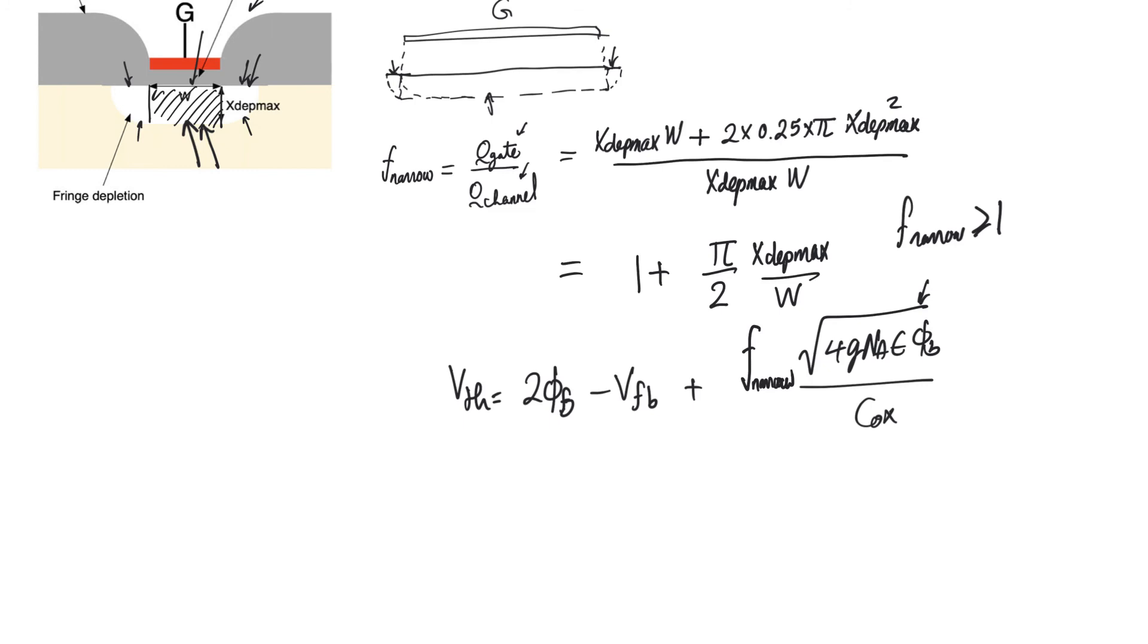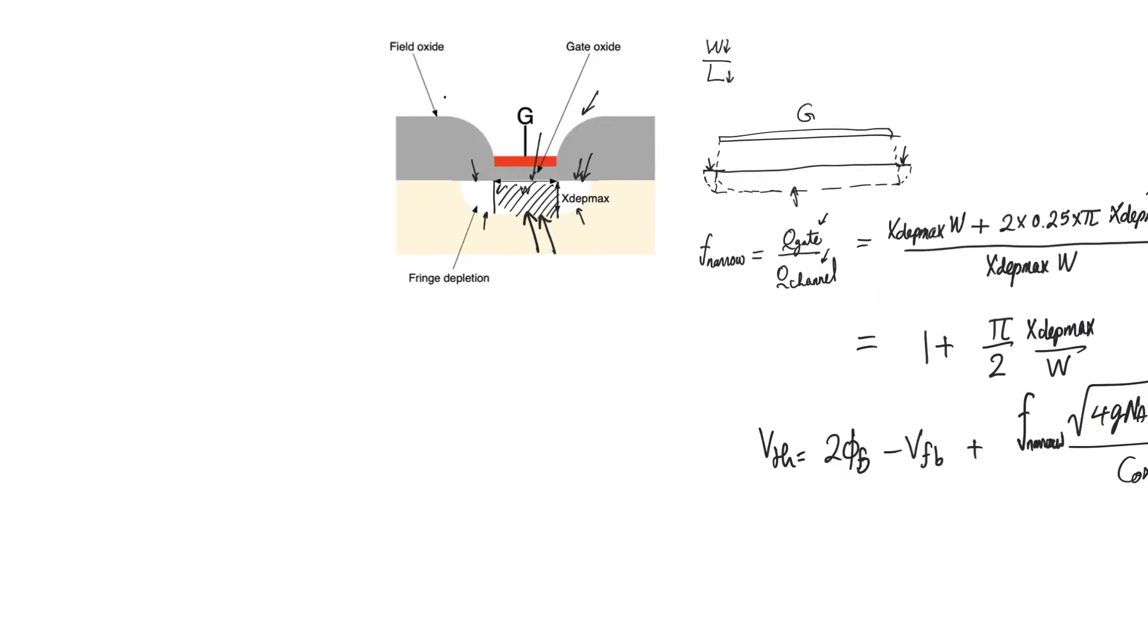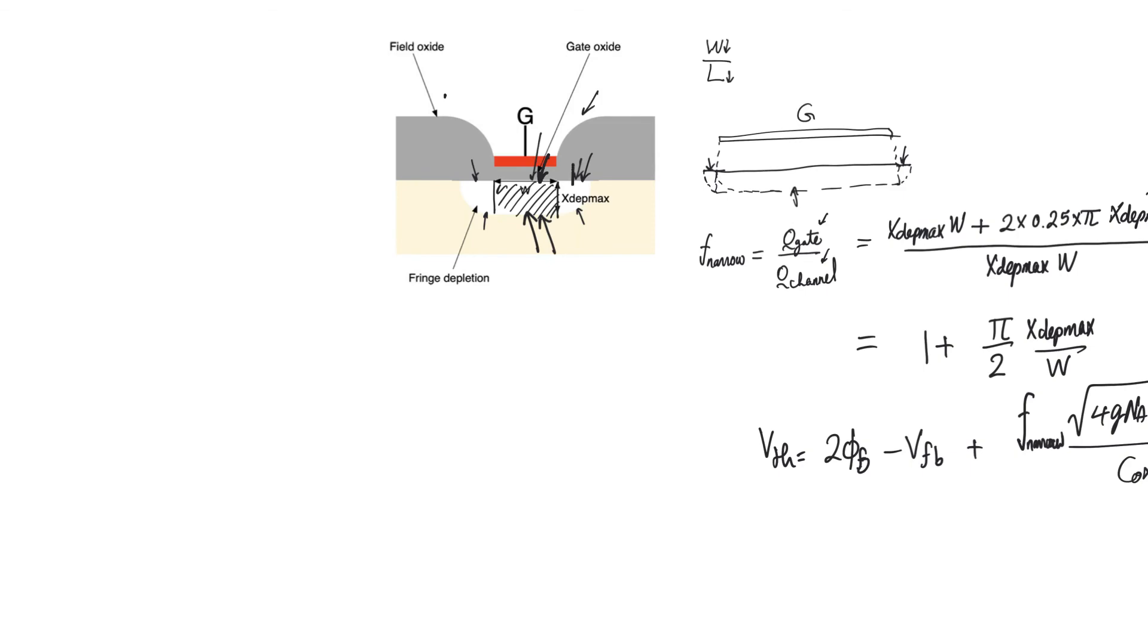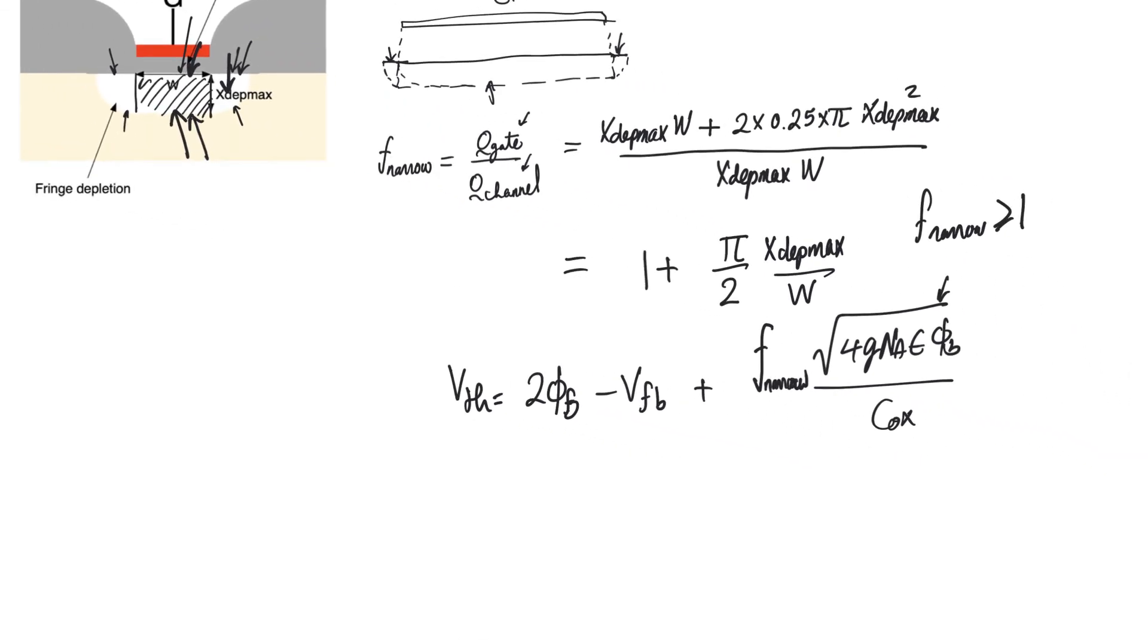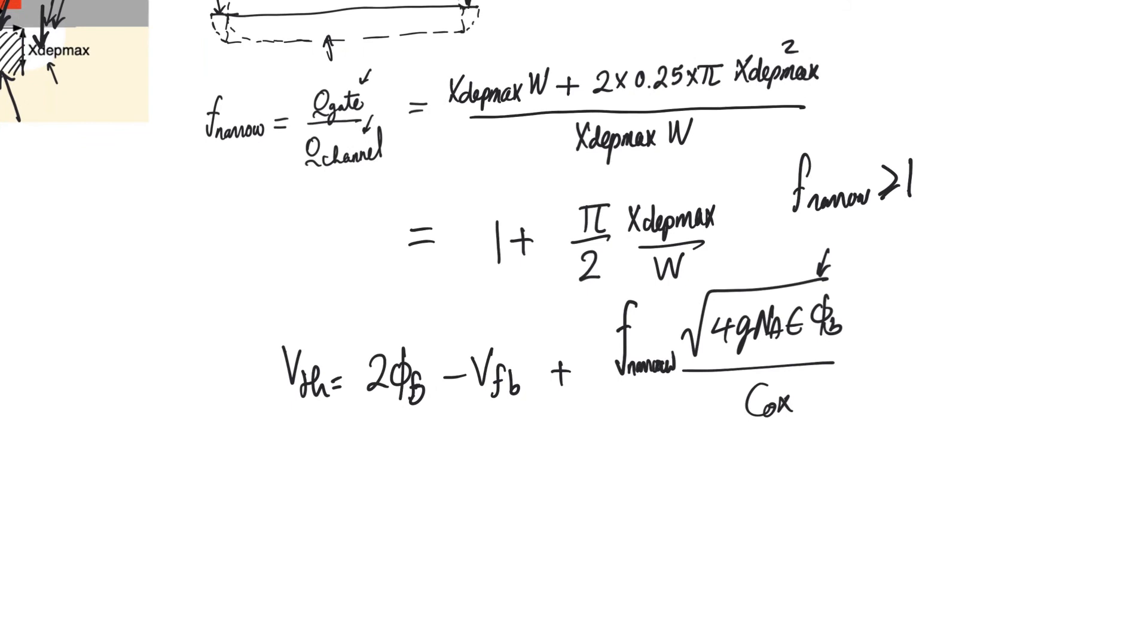F narrow is going to be equal to 1 when W is much greater than X depletion max. The whole thing is about whether W and the depth of the depletion region are comparable to each other or not. If W is much larger than X depletion max, which was the case in old transistors, then this effect would not be observed.